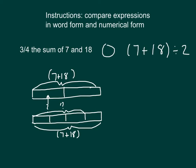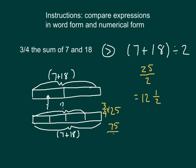So even without figuring it out, we know that this would be greater than. Now, if we were to take the time to complete that work: 7 plus 18 divided by 2 — 7 plus 18 is 25, and it would be 25 halves, which equals 12 and 1 half. Three quarters of the sum of 7 and 18 would be — the sum of 7 and 18 is still 25, and we're taking 3 quarters of that: 3 quarters times 25 is 75 over 4, which is more than 12 and 1 half.